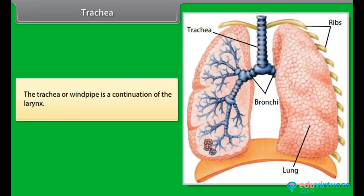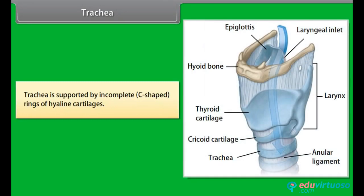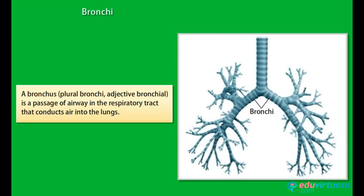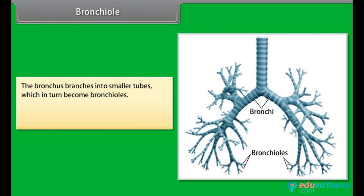Trachea: The trachea or windpipe is a continuation of the larynx. It is supported by incomplete C-shaped rings of hyaline cartilages. The mucosa of the trachea is lined with a ciliated pseudo-stratified epithelium containing mucus-secreting goblet cells, which help in pushing mucus out. Bronchi: A bronchus (plural bronchi) is a passage of airway in the respiratory tract that conducts air into the lungs. Bronchioles: The bronchus branches into smaller tubes which in turn become bronchioles; no gas exchange takes place in this part.